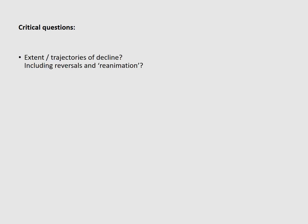I want to conclude by posing three critical questions. The first concerns how we understand de-agrarianization — the extent and trajectories of agricultural or agrarian decline — including questions around reversals and even evidence of reanimation. This is partially about local elite households, the top 5%, and the ways in which some of them choose to use wage earnings and reinvest in rural areas and agricultural production, accounting for local geographies of reanimation or re-engagement with agriculture.